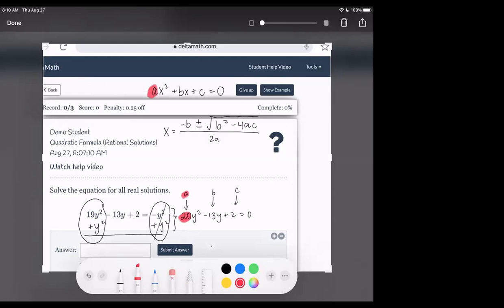So the 20 is A, negative 13 is the B, and 2 is the C. Alright, I'm going to plug all of this in to our equation, except instead of an x I'm just going to use y. Let's do that in a pen, not a highlighter. Y equals negative B,